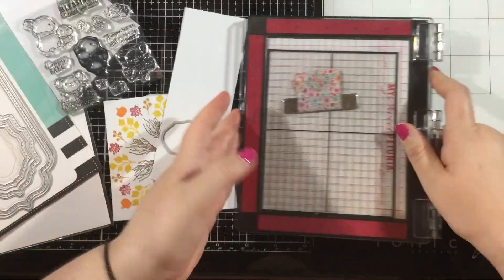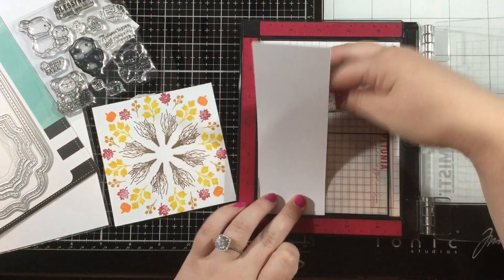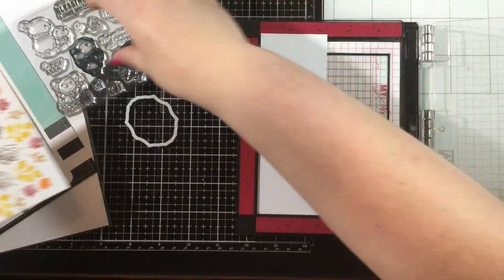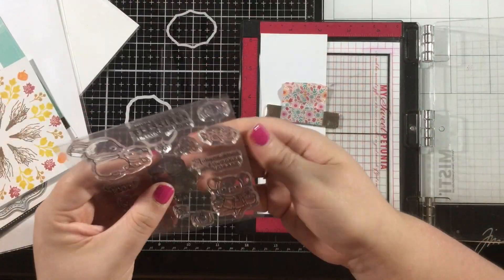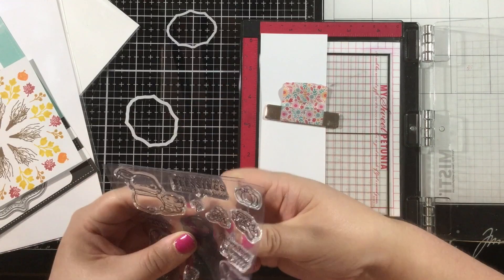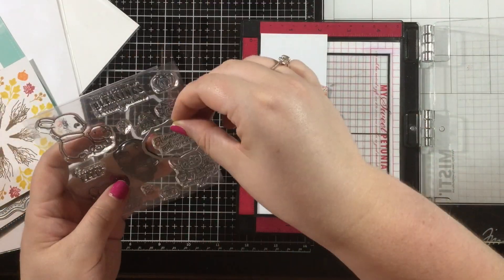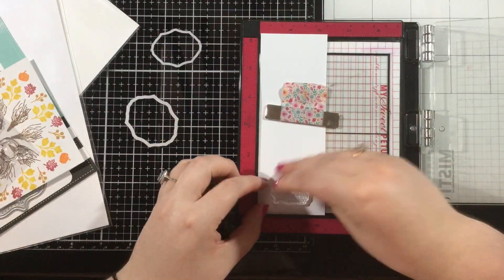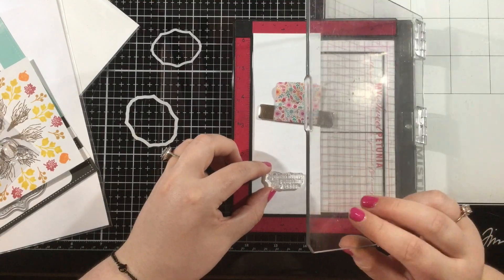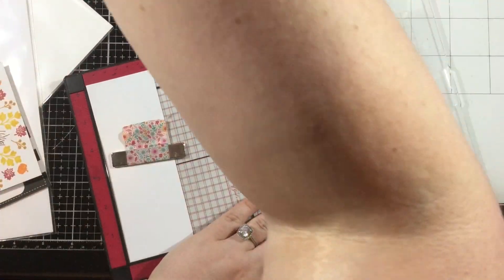I didn't want to cover up too much of that really gorgeous background, so I decided to just grab a sentiment and die cut that out and set that right in the middle. My sentiment is coming from the happy fall stamp set. This is an older LDRS creative stamp set but it works perfectly with my design.